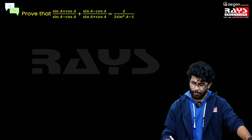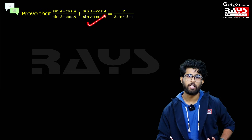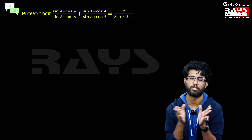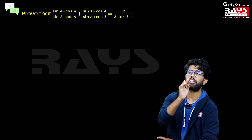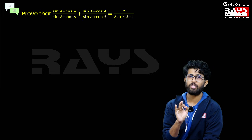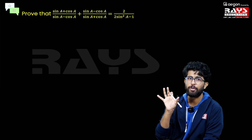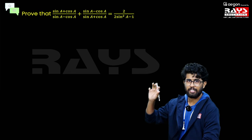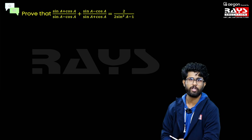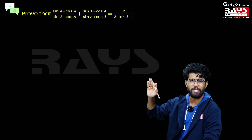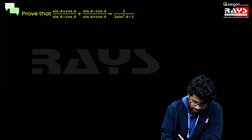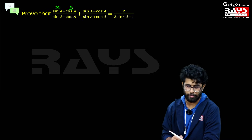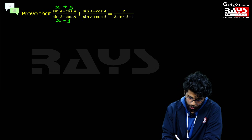Moving to the next very important question — this type is frequently asked in board exams, but students tend to skip it or get stuck and leave it. If you ever get stuck in a trigonometric problem, think of algebra — convert the trigonometry into algebra. Here we have (sin θ + cos θ)/(sin θ − cos θ) added to its reciprocal. So I'm going to write sin A as x and cos A as y, giving x + y over x − y plus x − y over x + y.